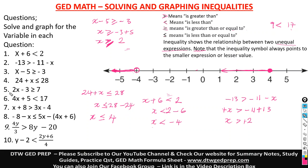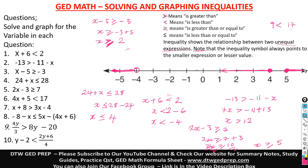Number 5 says 2x minus 3 greater than or equal to 7. Take 3 to the right side: 2x is greater than or equal to 7 plus 3, which is 10. Divide both sides by 2: x is greater than or equal to 5. Since it has the equal to sign, we shade our circle at 5 and the arrow goes to the right.